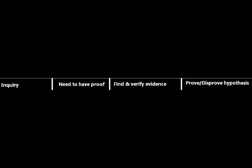Inquiry dialogue: the initial situation is a need to have proof. The participant's goal is to find and verify evidence, and the goal of the dialogue is to prove or disprove the hypothesis. One example of inquiry dialogue might be a courtroom situation — you find yourself in trouble for something you may or may not have done, and the need to have proof is on both sides. You need to prove you weren't there, or they need to prove you were, and you prove or disprove that hypothesis with whatever evidence or witnesses you can bring to trial.